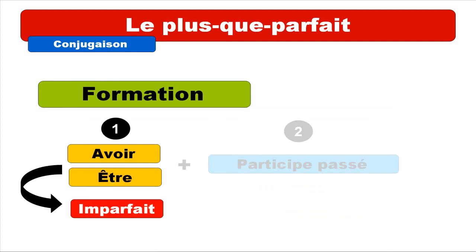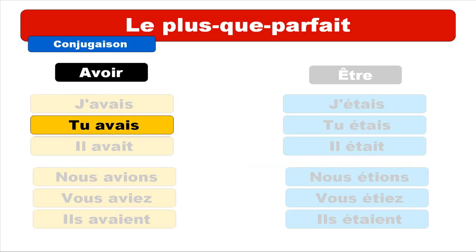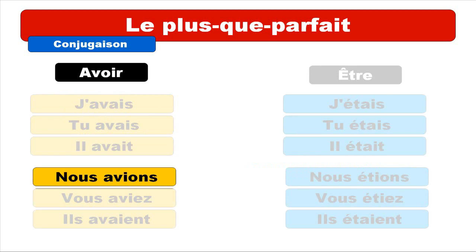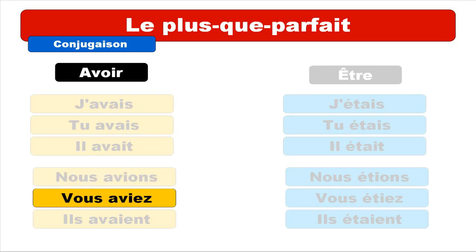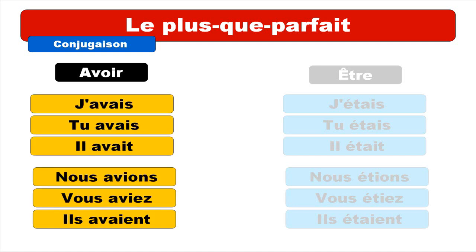To build the plus que parfait, avoir and être should be at the imparfait form. For avoir at the imparfait: j'avais, tu avais, il avait, nous avions, vous aviez, ils avaient.